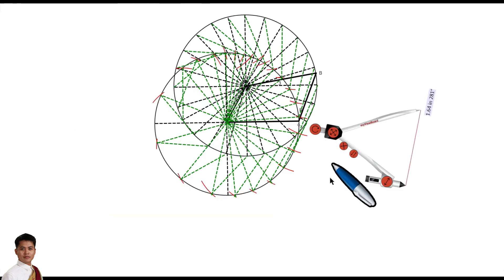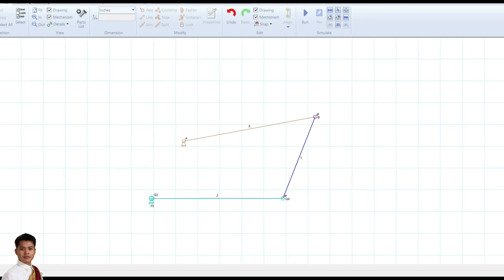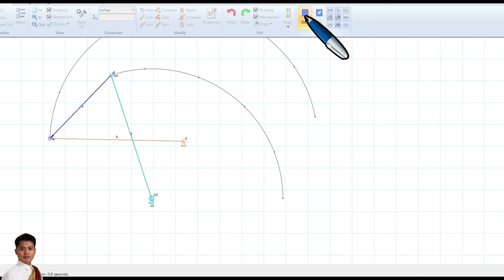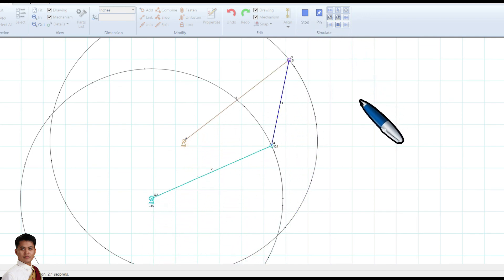So now, if you want to use our software, the linkage software, this is our mechanism. So we can just simply click on the play button to visualize the direction or the path of Q2 and B.